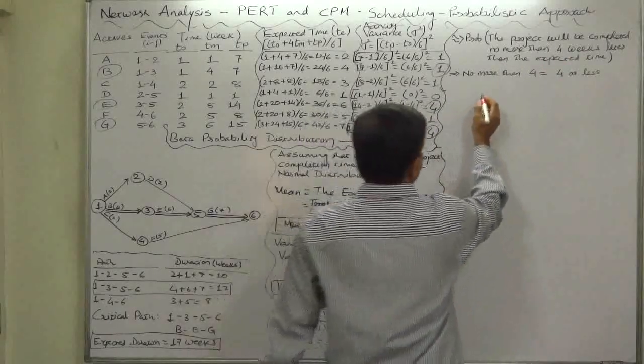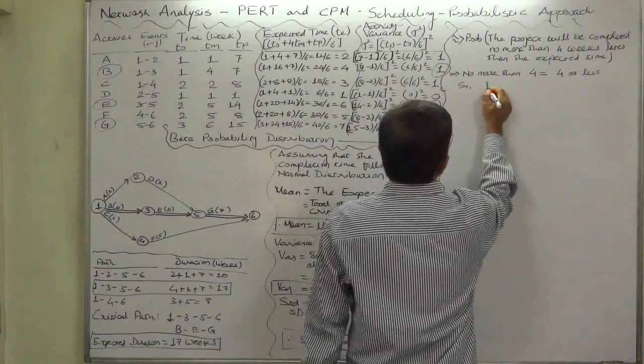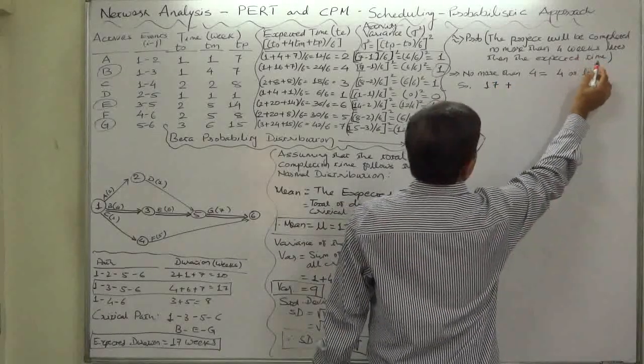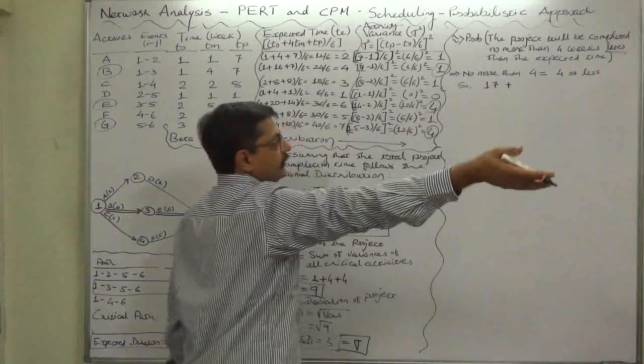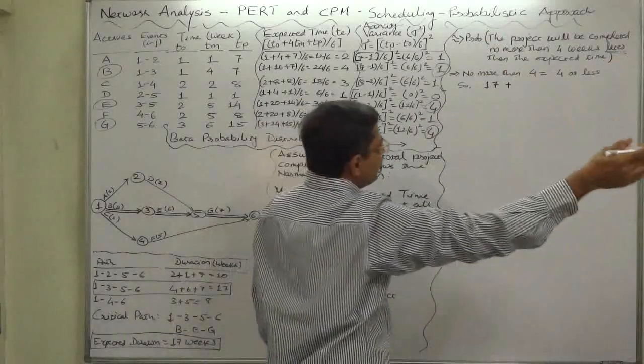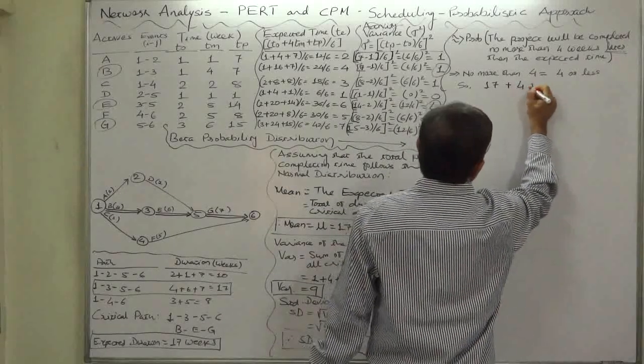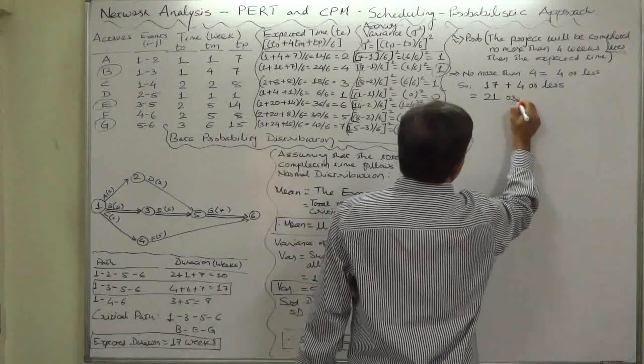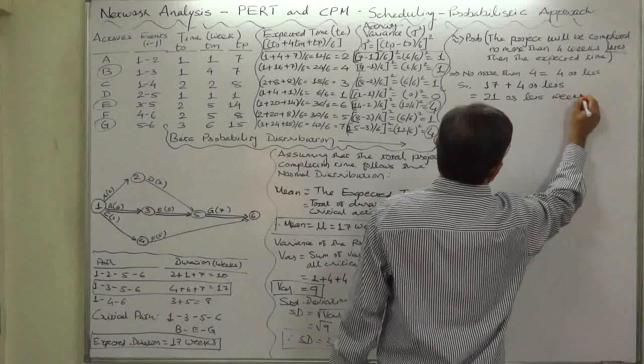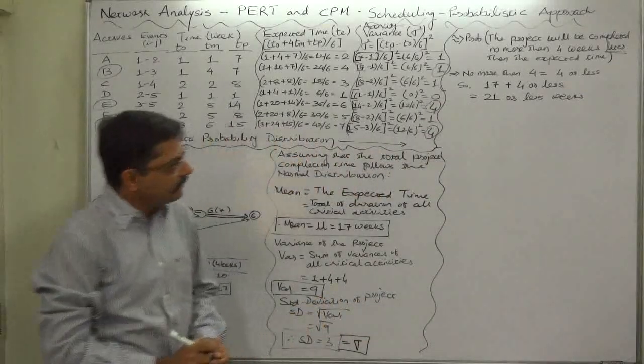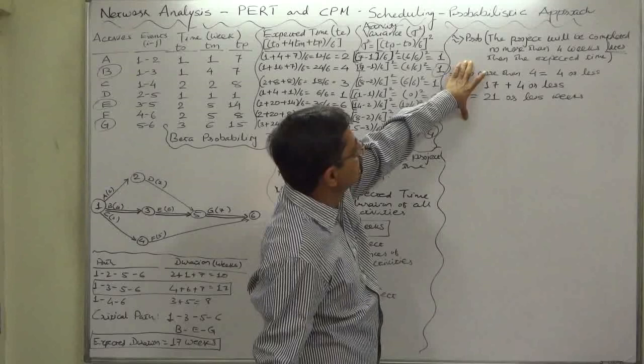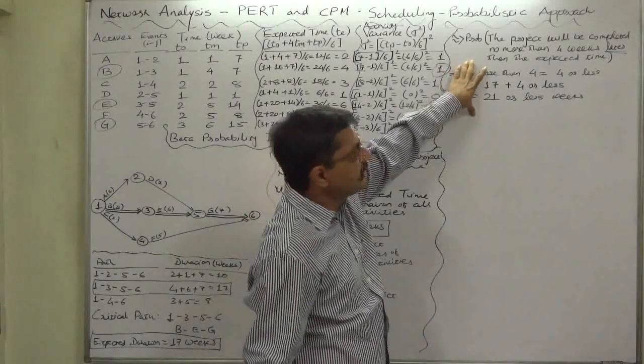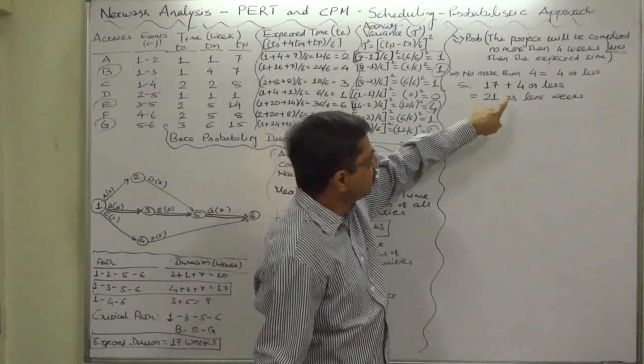No more than 4 means 4 or less, so 17 plus 4 or less will be 21 or less weeks. This is the interpretation. Again, I request you all to understand this very carefully because I have seen many students making mistakes at this stage.